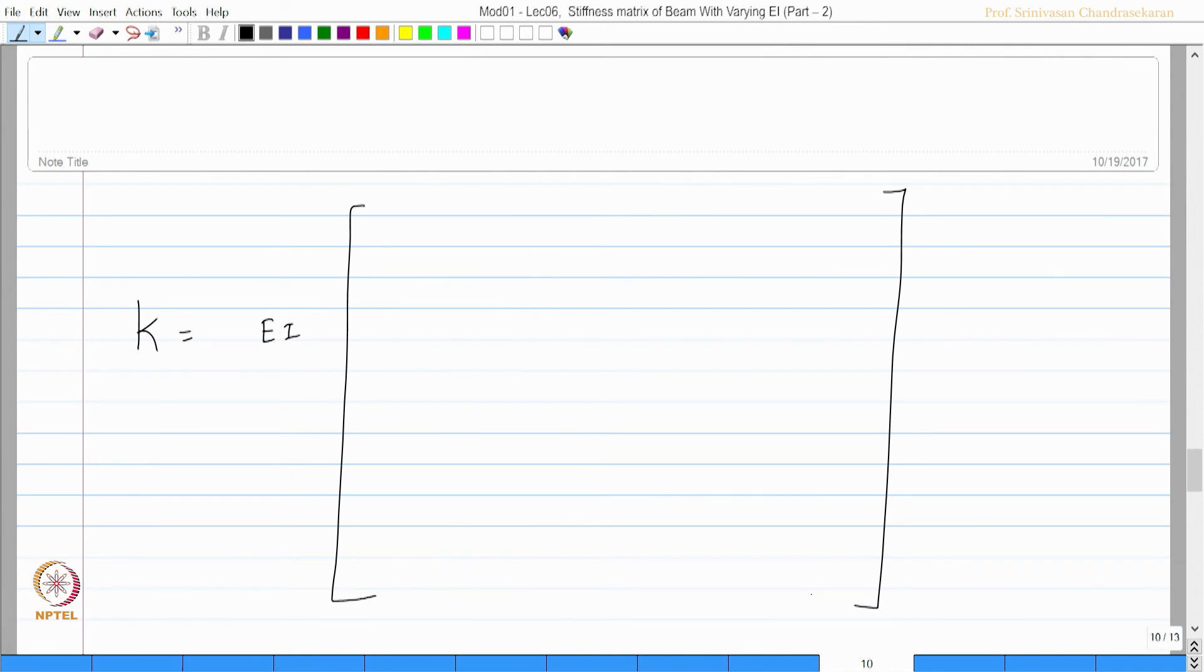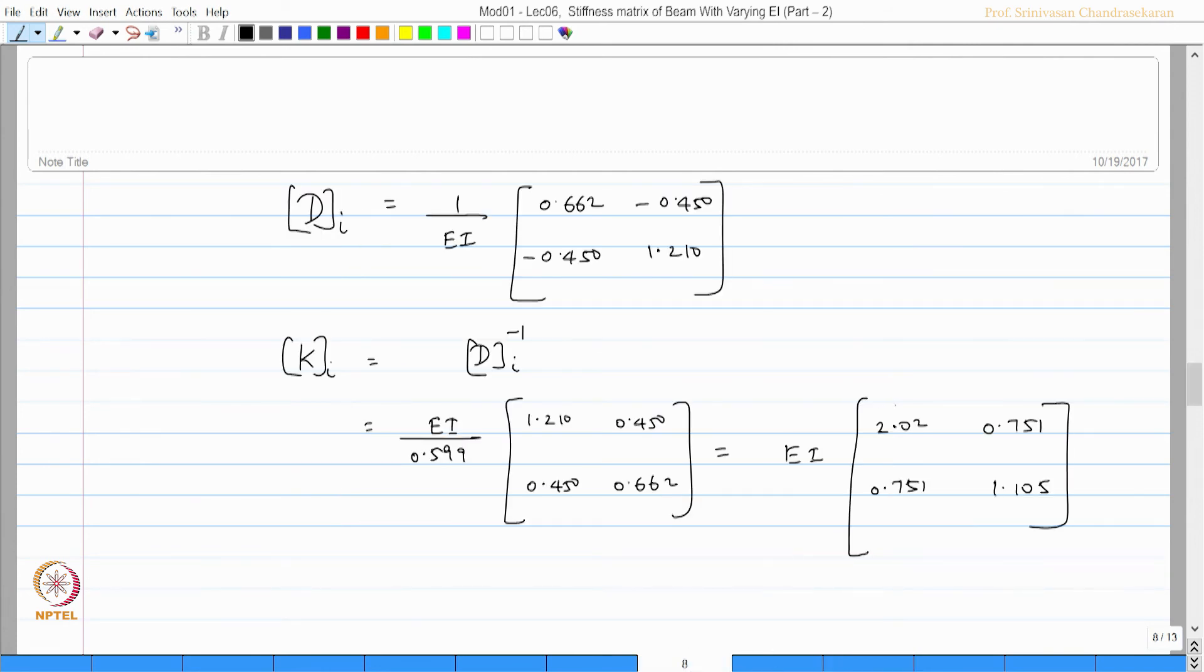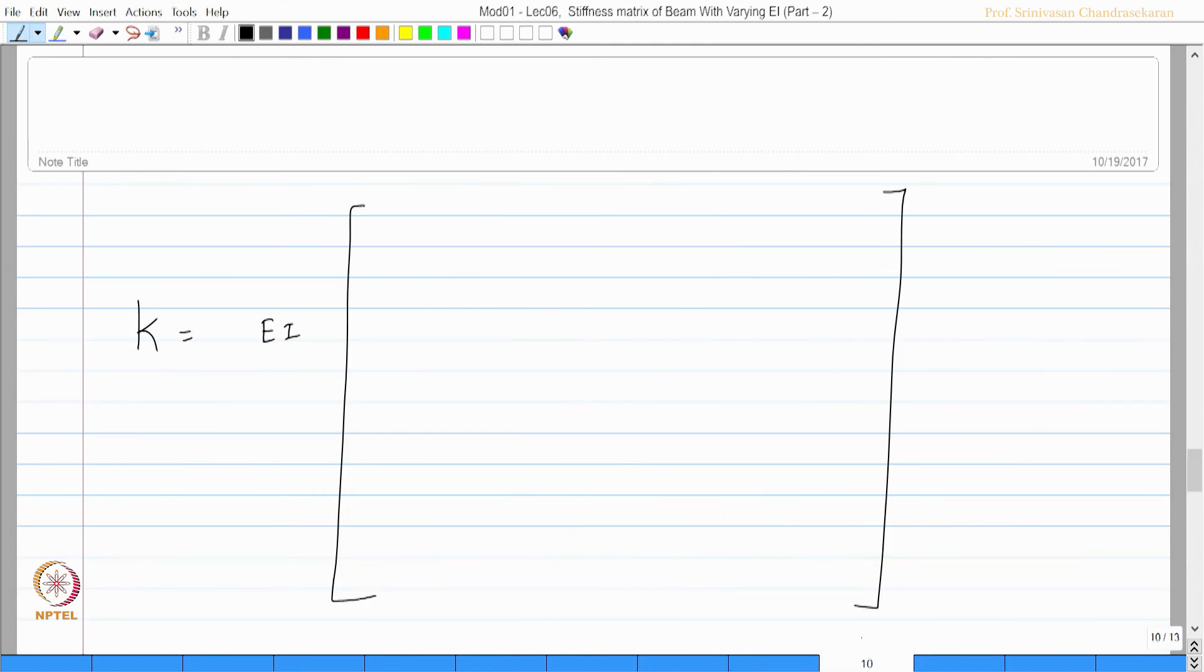So we already have this value with us. Let us borrow this and write it here. I should say P, Q, R, S. So 2.02, 0.751 rotational coefficients, 0.751, 1.105.